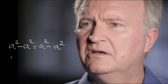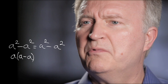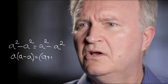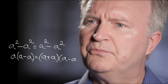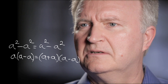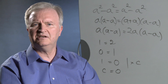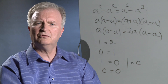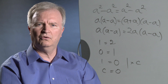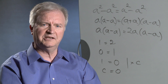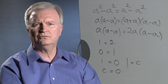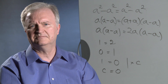On the left-hand side, we take out a common factor of a. On the right-hand side, we use the formula for factoring the difference of two squares. So a times (a minus a) is equal to (a plus a) times (a minus a), or what is the same, a times (a minus a) is equal to 2a times (a minus a).